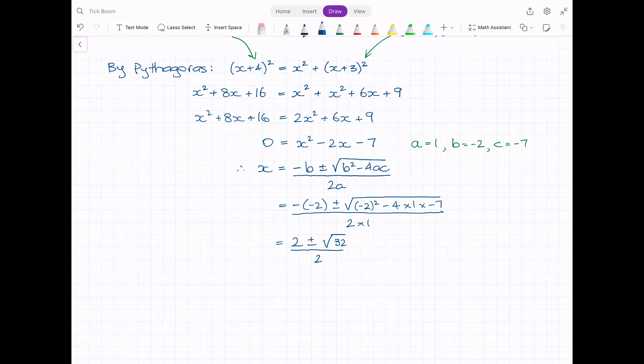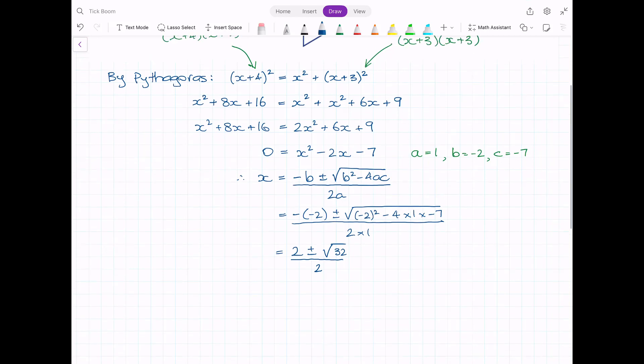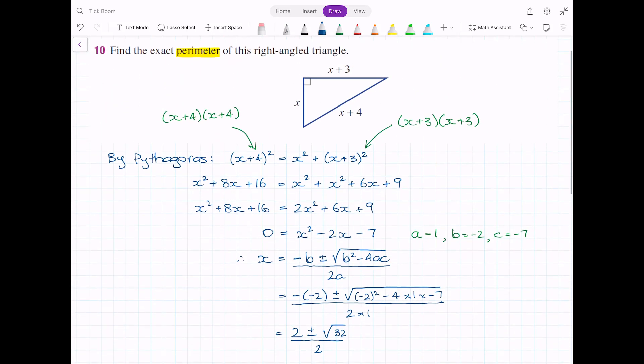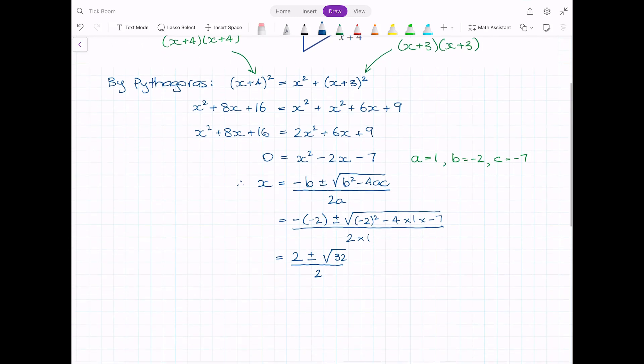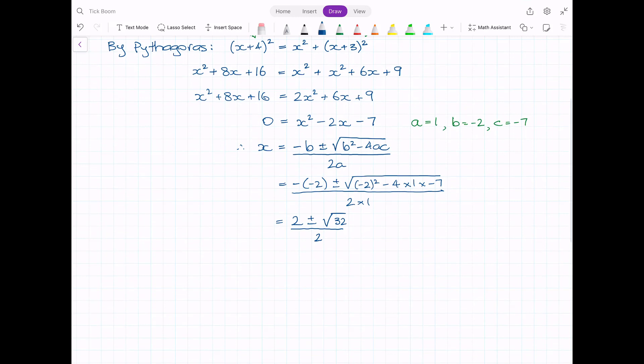At this point, there might be a temptation to just simply throw this into the calculator. But for this question, we need to remember that we've been asked to find the exact perimeter. Given there's probably a radical here somewhere that won't simplify to a whole number, we can't just blindly throw this into the calculator. I'll have 2 plus or minus, and 32 I need to notice is 16 times 2.